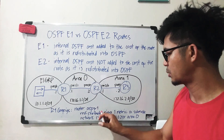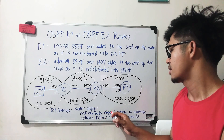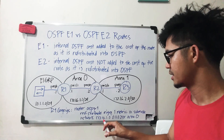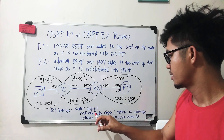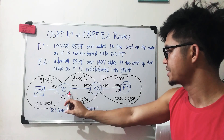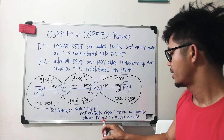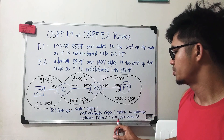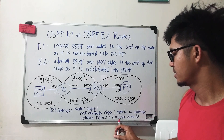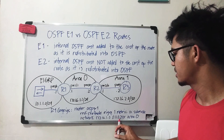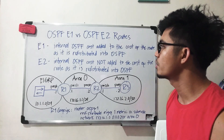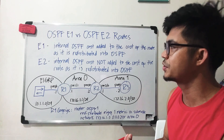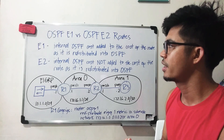The 'network' command basically means that you are including this interface into OSPF area 0. This is the network of your interface, followed by the wildcard mask, and then area 0. But the focus here is, of course, the E1 and E2 OSPF route types.